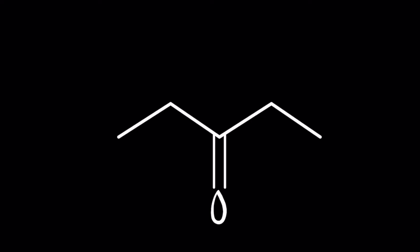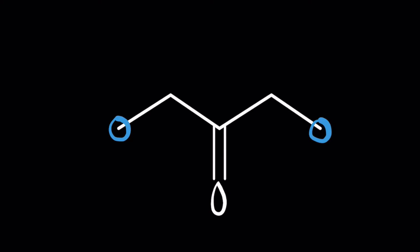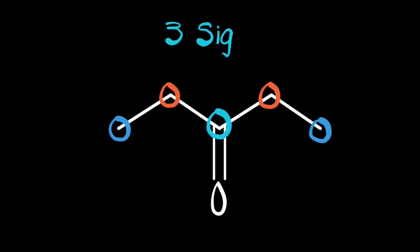This next molecule is a lot like the one we saw with the H1 NMR. These two carbons will be chemically equivalent, experiencing the same chemical environment. These two carbons will also be chemically equivalent. This carbon will experience its own chemical environment. Therefore, this molecule will show up with three signals.